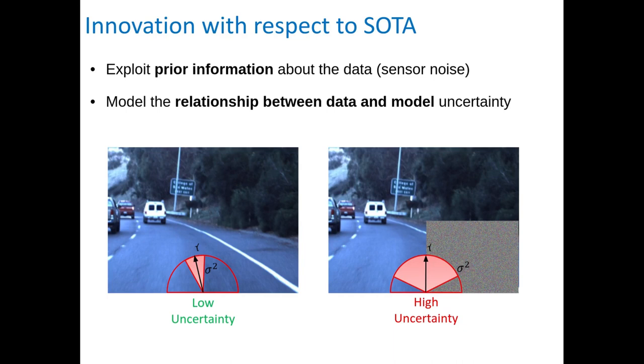With respect to state-of-the-art, we propose two major innovations. First, we propose to use prior information about the data that a robot has in the form of sensor noise to predict better uncertainty. And also, we propose to model the relationship between the two uncertainties, the data and the model, to better predict the total uncertainty of a neural network.